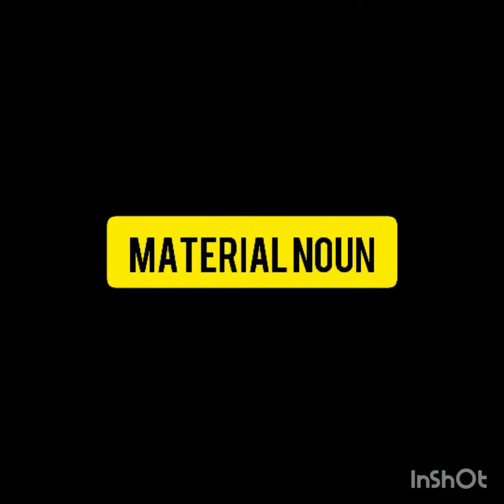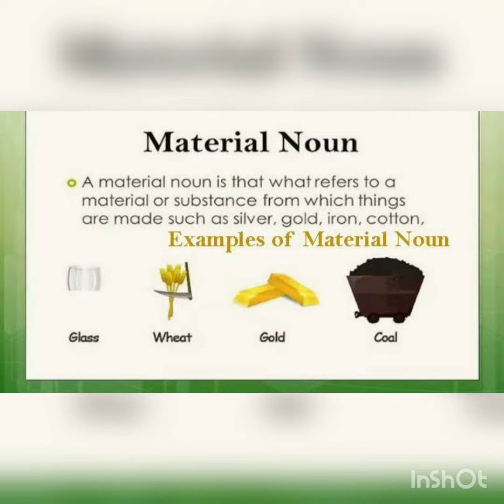Now the next is material noun. What is a material noun? Material noun refers to a material or substance from which things are made, such as silver, gold, iron, cotton. For example, we make a gold ring with the help of gold.